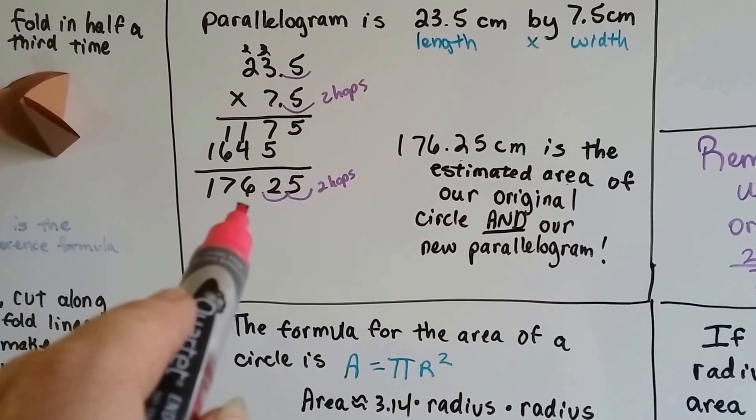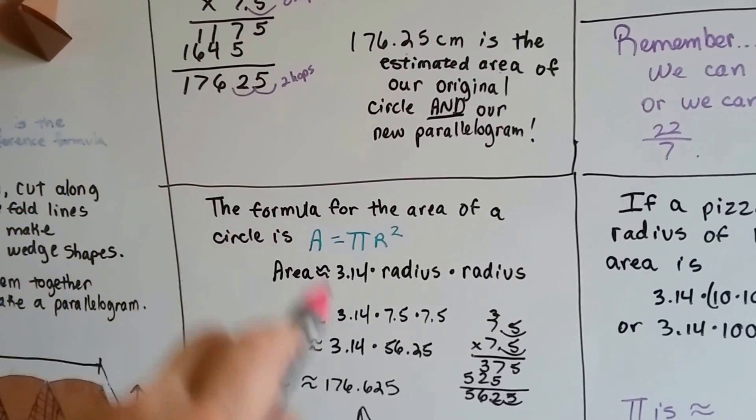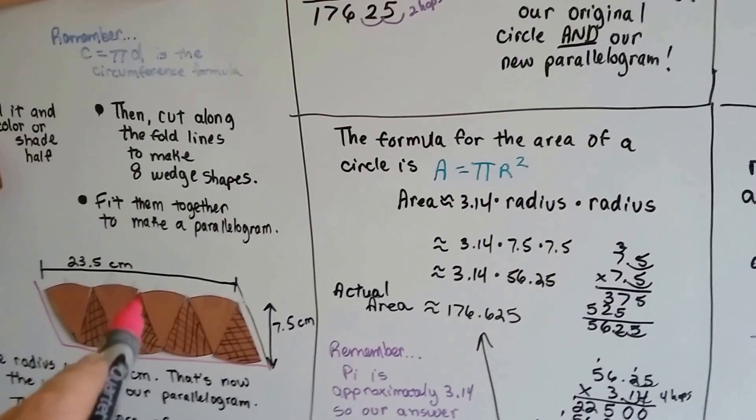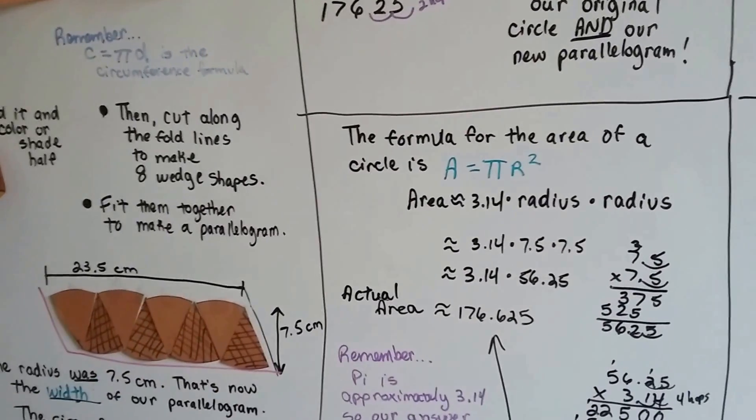176.625. Look what we had when we made the parallelogram: 176.25. It was really close, wasn't it? So that was a good way to estimate the area of the circle by turning it into a parallelogram.